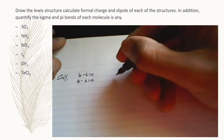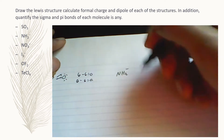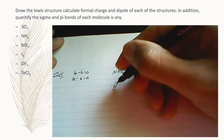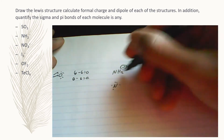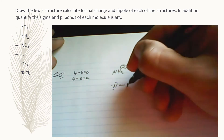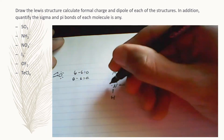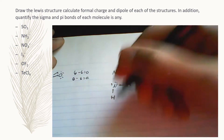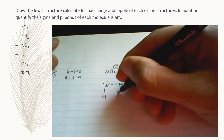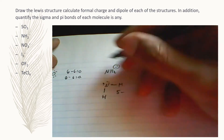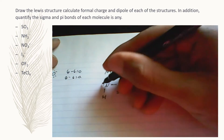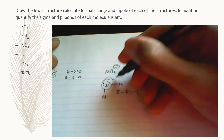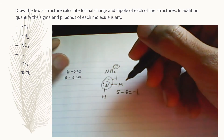Next is NH2⁻. Nitrogen has five valence electrons, and there's one extra electron from the negative charge. One hydrogen here, one hydrogen here, and the extra electron included on nitrogen. Formal charge of nitrogen: five valence electrons minus six surrounding electrons — five minus six equals negative one. Total formal charge of nitrogen: minus one.